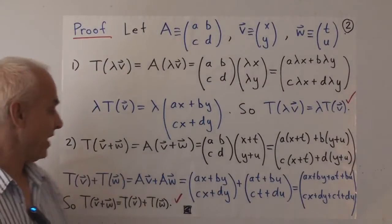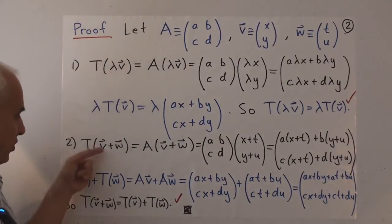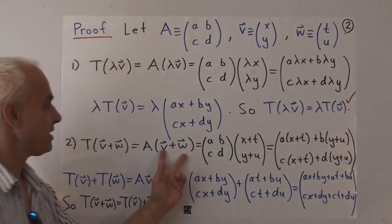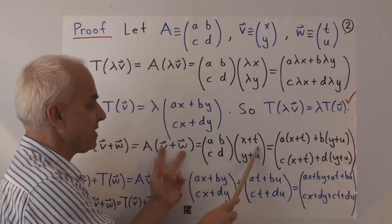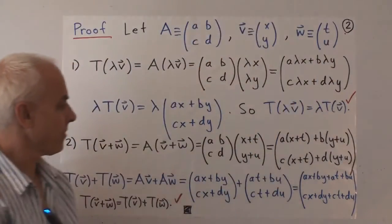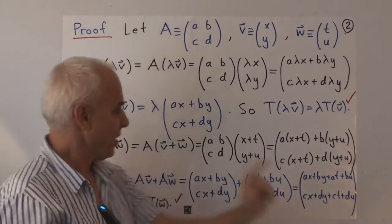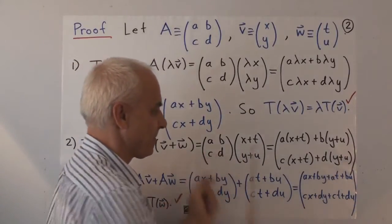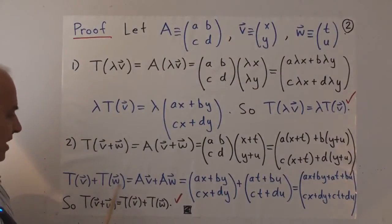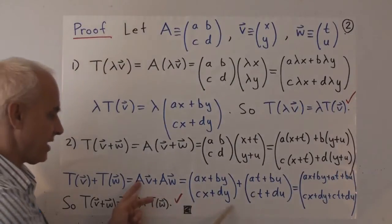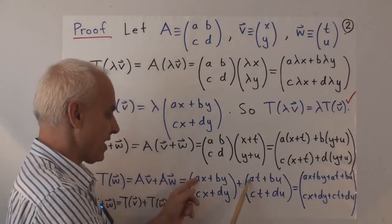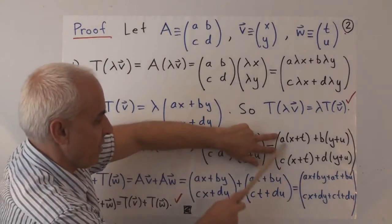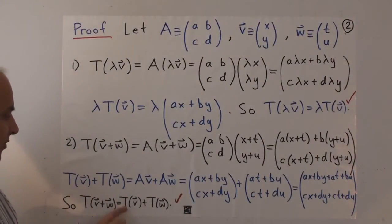The second property is T of V plus W should equal T of V plus T of W. T of V plus W equals A times (V plus W), which is A times (X+T, Y+U). That gives (A(X+T) + B(Y+U), C(X+T) + D(Y+U)). On the other hand, T of V plus T of W equals A times V plus A times W — adding components gives the same result. So T of V plus W equals T of V plus T of W.